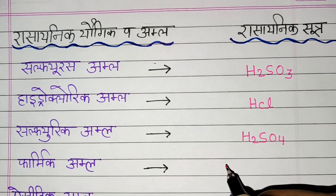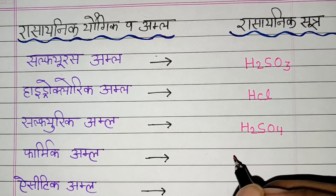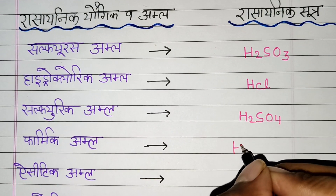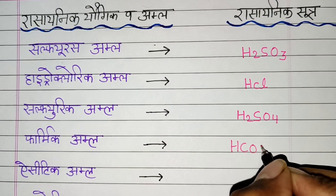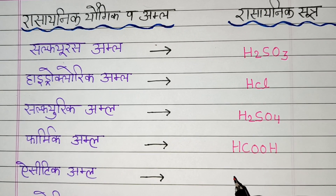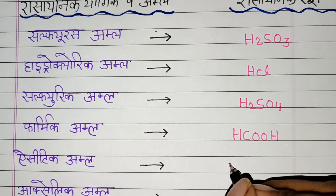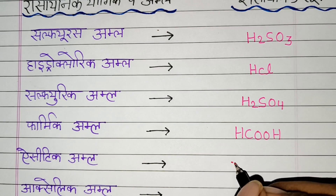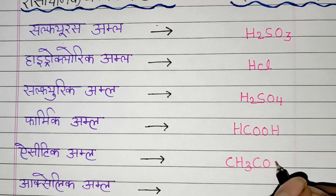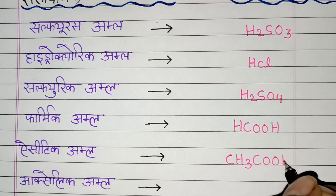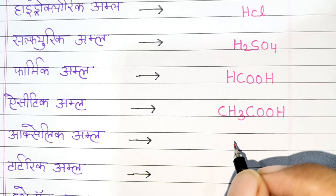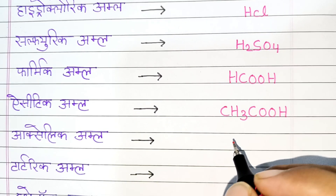4. Formic Acid: HCOOH. 4. Acetic Acid: CH3COOH. 5. Oxalic Acid: C2O4.